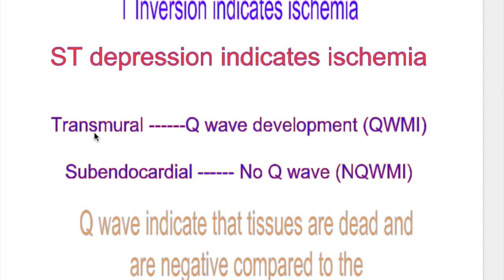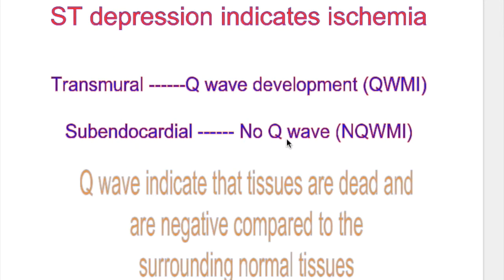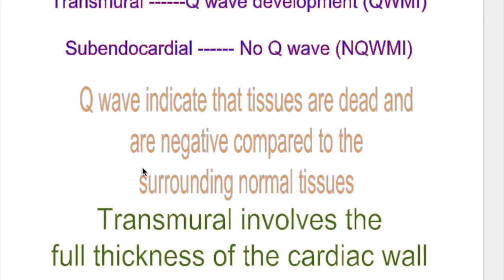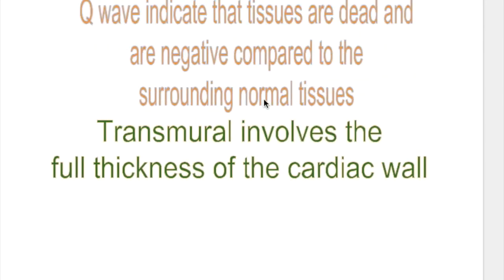In transmural infarct there is development of the Q wave, which is why it is also known as Q wave MI. But in subendocardial infarct there is no Q wave — it is also known as non-Q wave MI. However, not all transmural infarcts develop a Q wave; if treatment is started early, the Q wave doesn't develop. The Q wave indicates that tissues are dead and are electrically negative compared to the surrounding normal tissues.